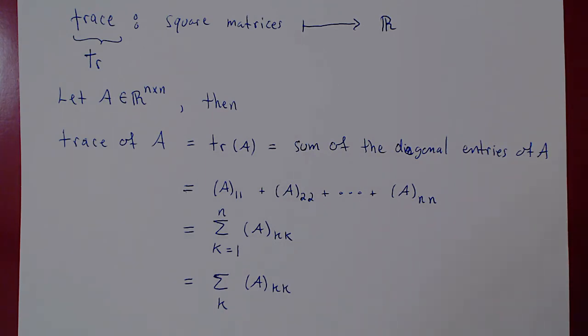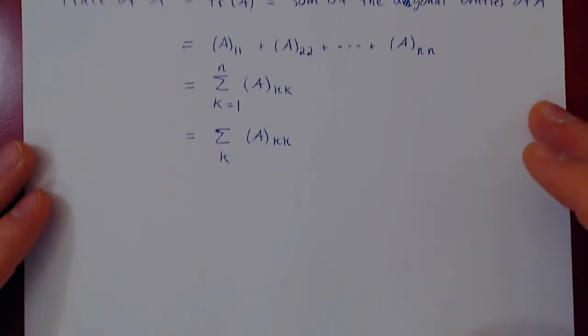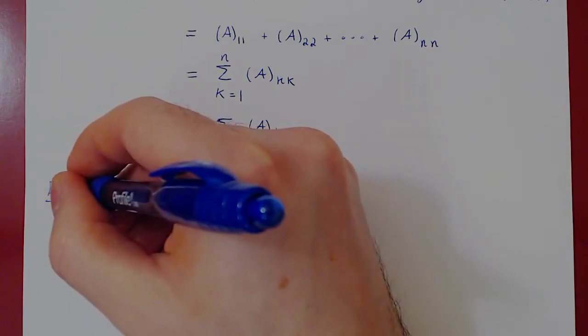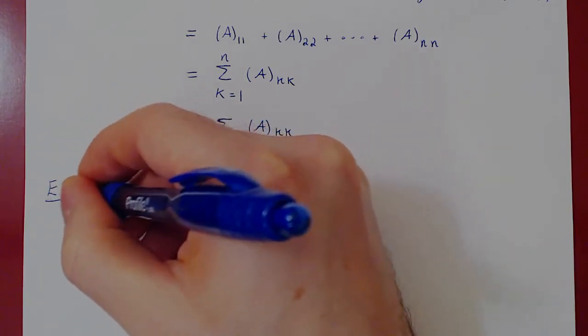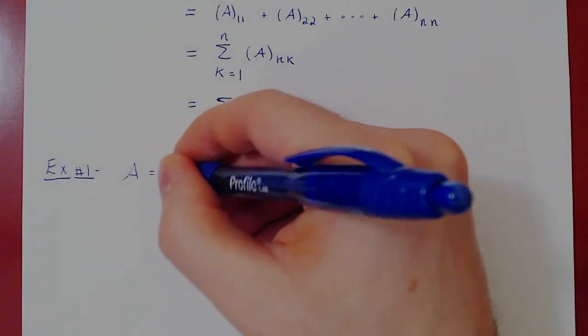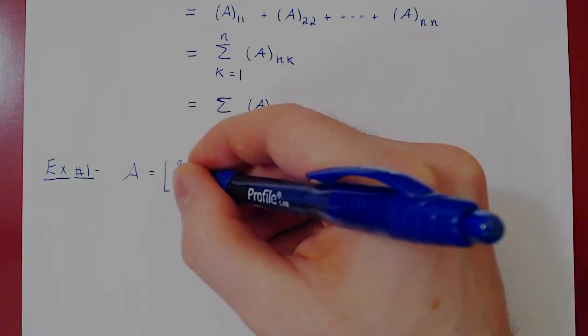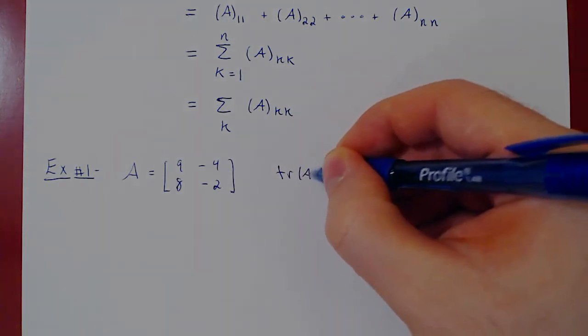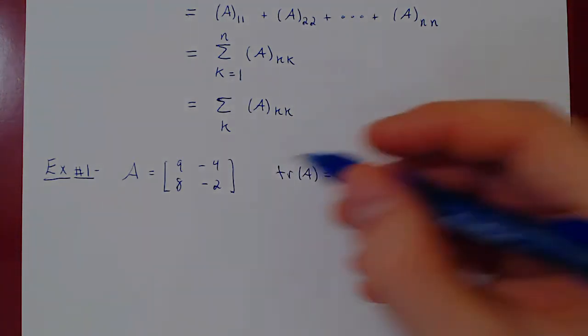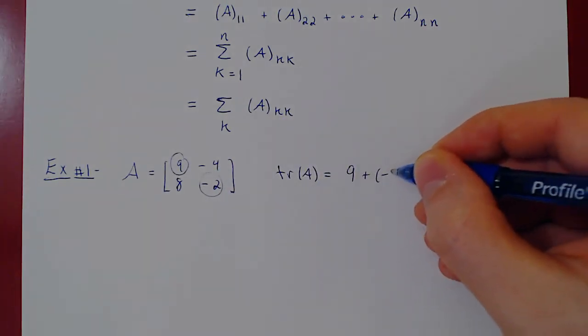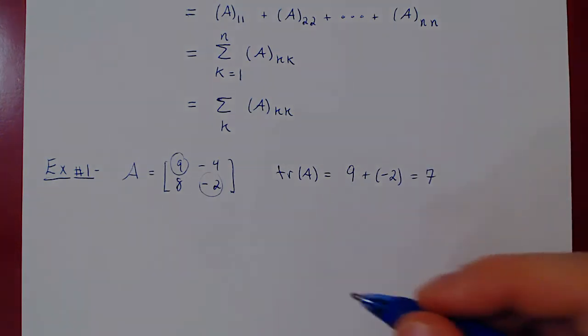Let's consider two simple examples and then look at the properties of the trace. So what if A was a 2 by 2 matrix? 9, negative 4, 8, negative 2. Then the trace of A is the sum of the diagonal entries. So it is 9 plus negative 2, which is simply 7. That's it.